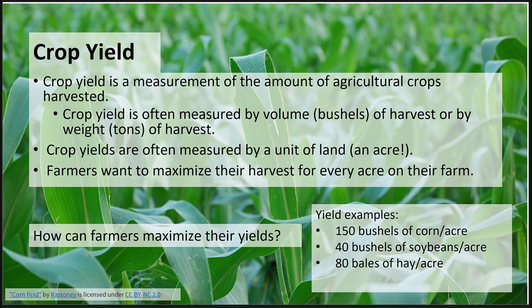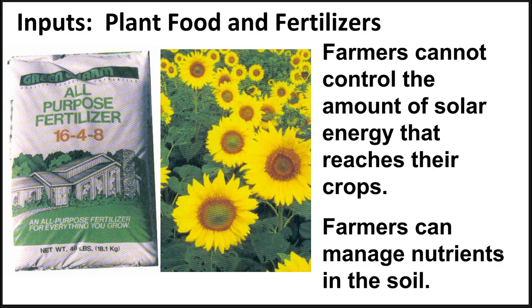Crop yield is often measured by volume or weight. A bushel of corn weighs about 156 pounds, and yields can be up to 150 bushels per acre. According to Dan Swafford, yields have increased since the 60s when 100 bushels per acre was a good yield for corn and 25 bushels for soybeans. Much has changed over the years. To change those yields, farmers cannot lengthen a day, but they can manage other inputs such as the amount and location of nutrients applied to the soil.